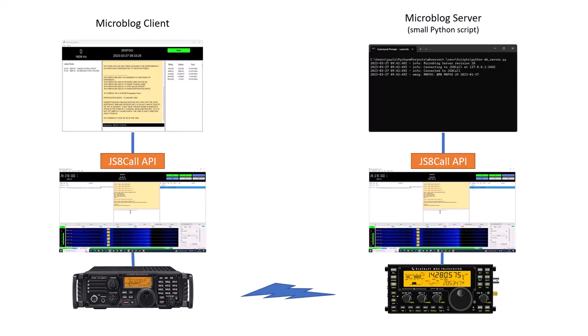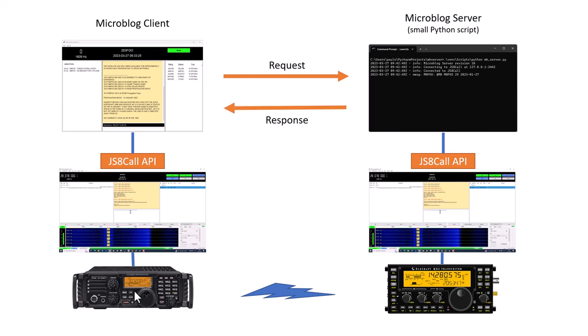This diagram is slightly different from the earlier one — we now have an additional program, the MB Client, sitting between the operator and JS8 Call. You still need JS8 Call running and a transceiver. In the same way as using JS8 Call directly, MB Client sends requests to the server and gets responses back.